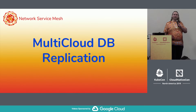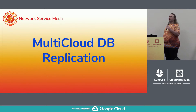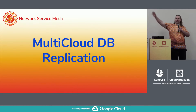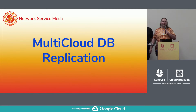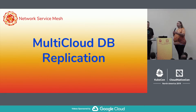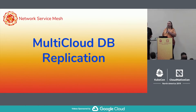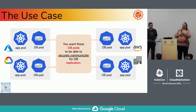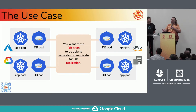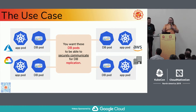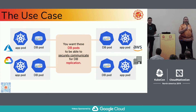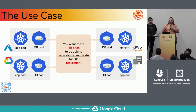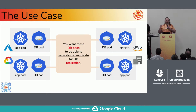Next example: multi-cloud DB replication. How many of you use databases? How many of you would like the option of running in more than one cloud? Now you intrinsically have a problem — your data lives somewhere and you've got to get it to where you want to use it. Most databases don't use HTTP for synchronization or data replication; they use some bespoke protocol on top of IP. The basic use case: you've got Azure, Google Cloud, AWS, and maybe something on-prem, each with a MySQL database pod in their respective clusters. What you really want — the network service — is for those database pods and only those database pods to be able to replicate securely between them.